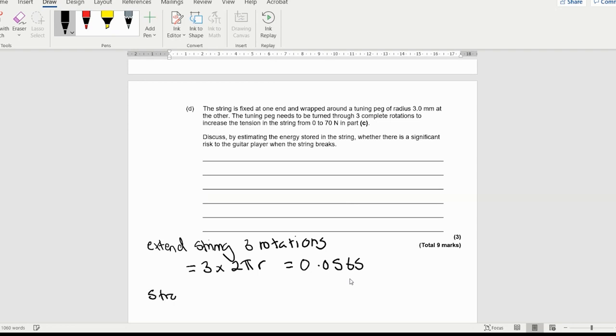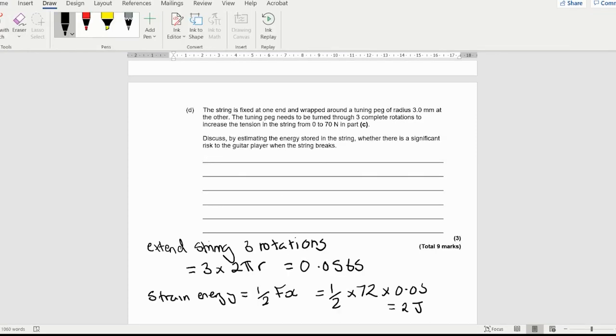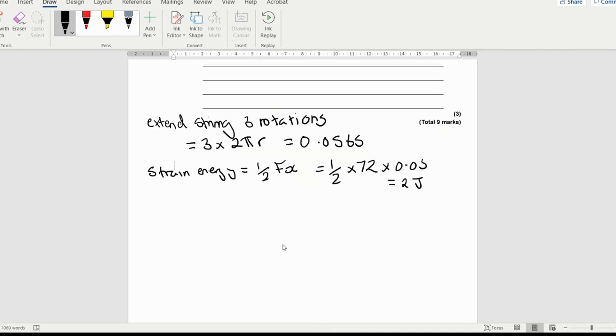You're extending the string by that many rotations. Strain energy is a half fx, so it's going to be a half times by 70 or 72 times by 0.0565. Times that by 72, divide it by two, I've approximately got about two joules worth of energy being stored in that object. If you think about it, two joules, you want to start comparing. This is where it gets quite interesting, this idea of discuss by estimating the energy.